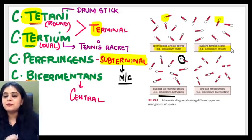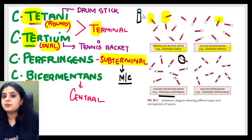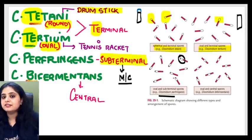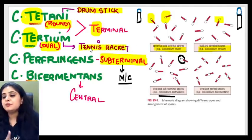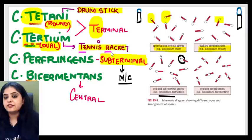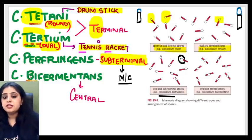How do you differentiate between tetani and tertium since both show terminal spores? In one, the spore is round — looking like a drumstick — that is Clostridium tetani. In the other, the spore is oval, like a tennis racket — that is Clostridium tertium. To remember: tertium contains 'T-E-R', which should remind you of tennis racket; tertium is tennis racket, tetani is drumstick. Perfringens is the most common variety, with subterminal spores.